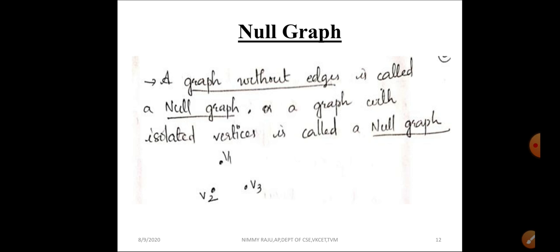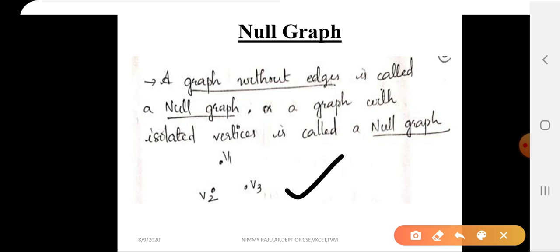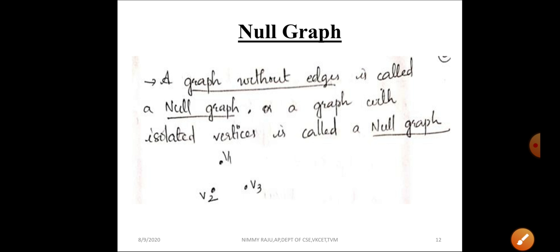A null graph is a graph which consists of only isolated vertices and no edges. A graph without edges is called a null graph. For example, a graph with only three isolated vertices v1, v2, and v3 and no edges between them is an example of a null graph.